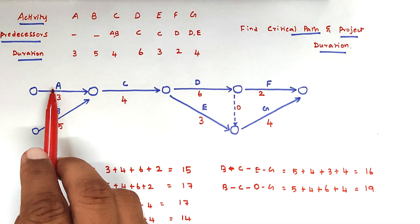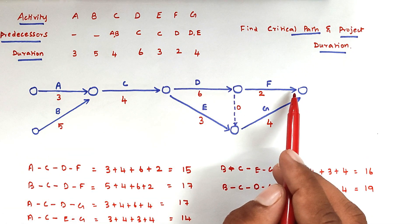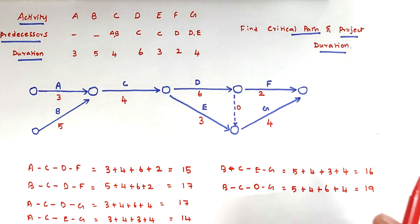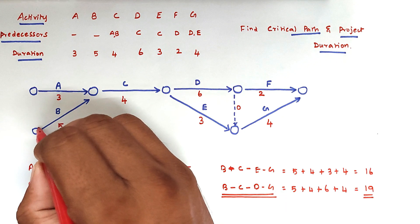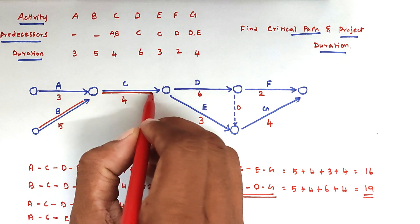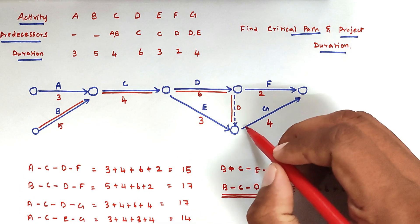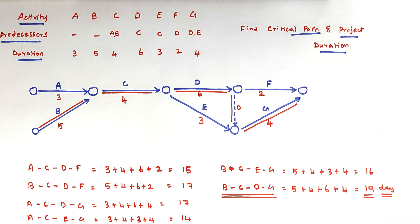So there are 6 paths in total. We know the critical path is the one containing the maximum duration. Here the maximum duration is 19, so the critical path is B, C, D, G. The critical path duration, or project duration, is 19 days. This is the method we can use to solve the problem. We will see more in the next video. Thank you.